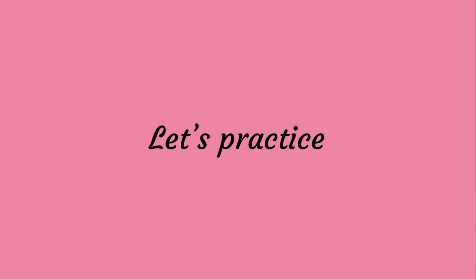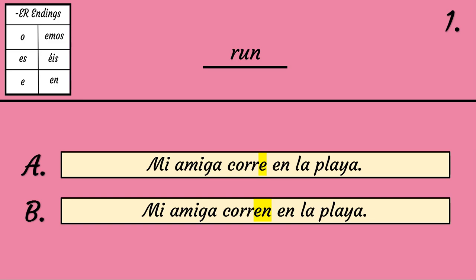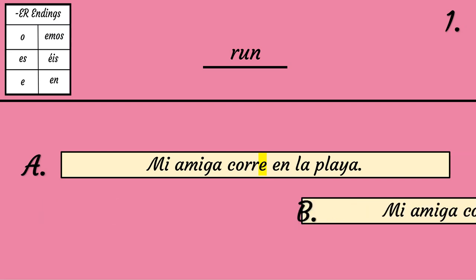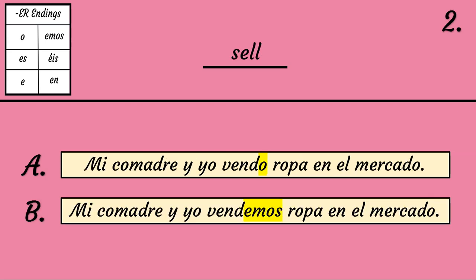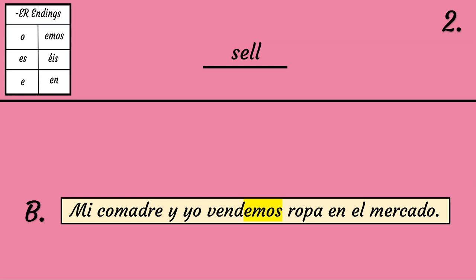Let's practice. What is the correct conjugating form? A. Corre. B. Corren. The correct answer is A — Mi amiga corre en la playa. What is the correct conjugating form? A. Vendo. B. Vendemos. The correct answer is B — Mi comadre y yo vendemos ropa en el mercado.